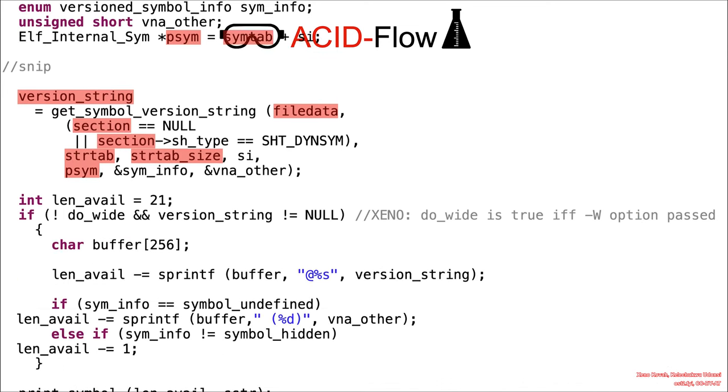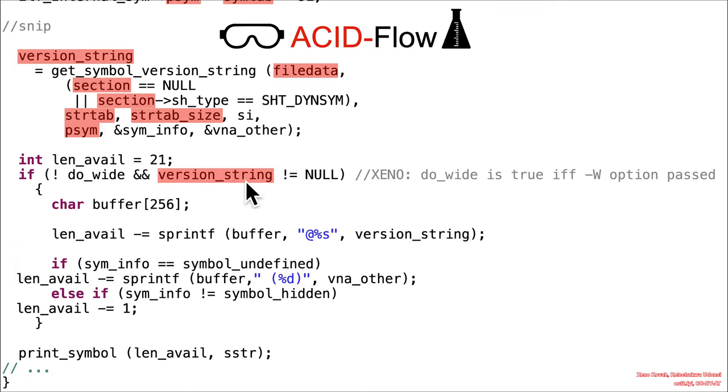So moving along, we see version_string is used in this check of some sort. I said in the comment here that do_wide is true if and only if dash w is passed for the command line options into readelf. So that means that do_wide is going to be false, so not false is true, so true and version_string not equal to null, so as long as there was some version string in there and this returned successfully, then we go into this code.